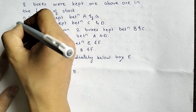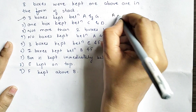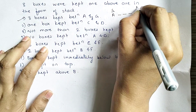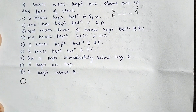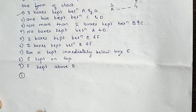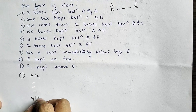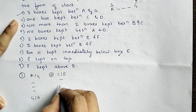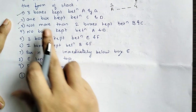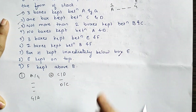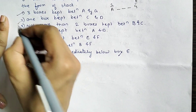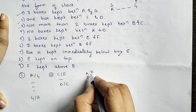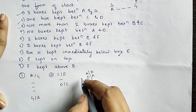Let's go statement by statement. First, 3 boxes are kept between A and G, so A and G have 3 boxes between them. Next, 1 box is kept between C and D. Not more than 2 boxes are kept between B and C. No boxes are kept between A and D — that means A and D are immediate neighbors.